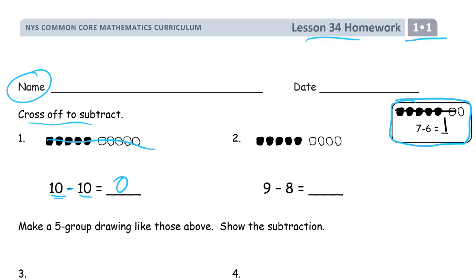Here we're starting with 9. We're starting with 9 and we're subtracting, so we're crossing out 8: 5, 6, 7, 8. There's one left.